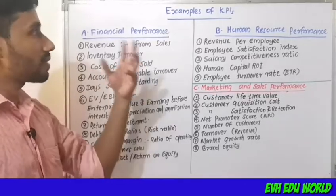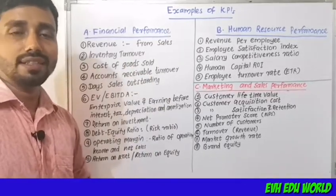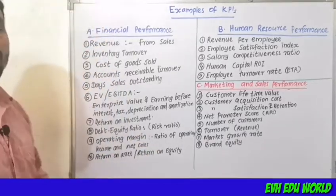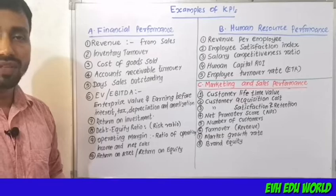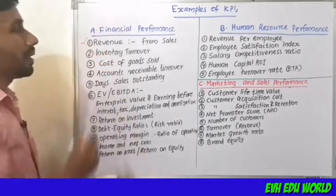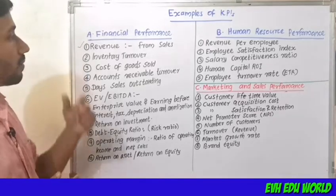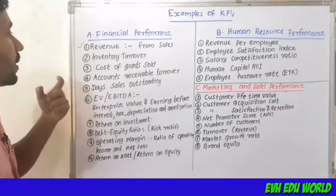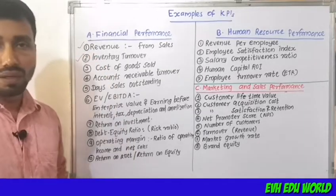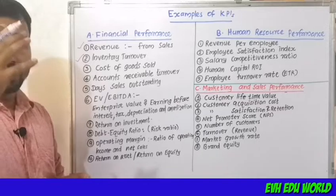Now discussing some examples of KPIs. The first category is financial performance. The first example is revenue — that is income derived from the sale of goods. The second one is inventory turnover — in an organization, it refers to how quickly stock is sold.